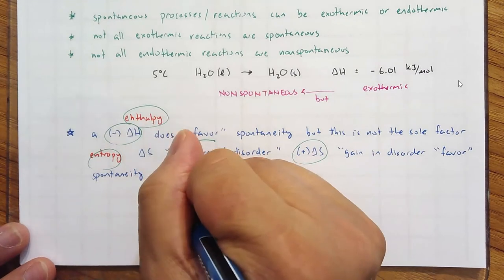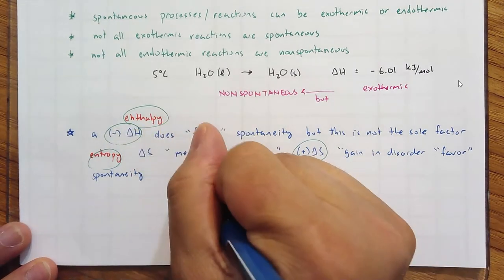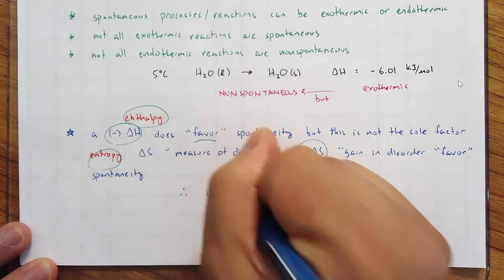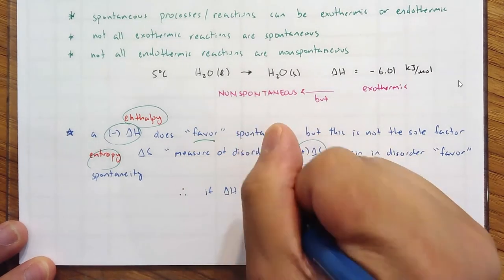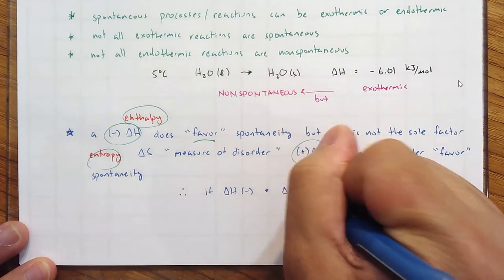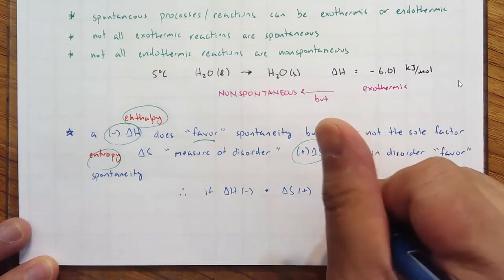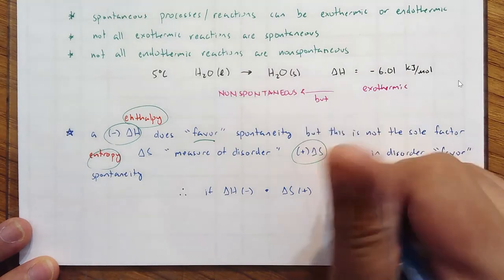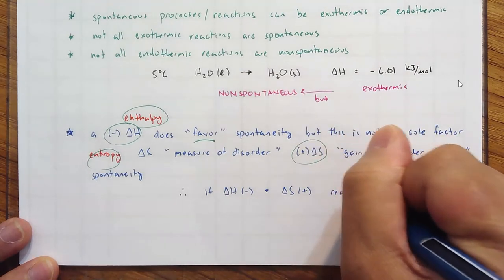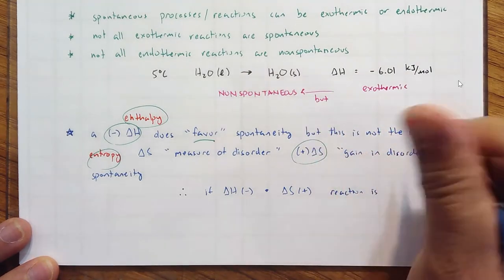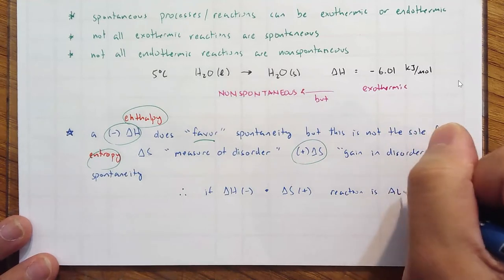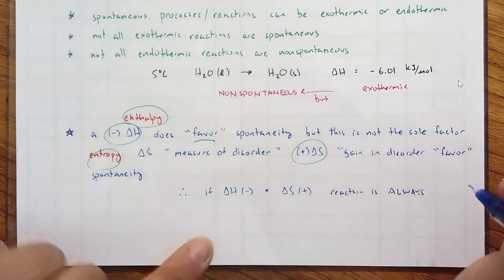Conclusion: if delta H is negative and delta S is positive, absolutely, the reaction is always spontaneous.